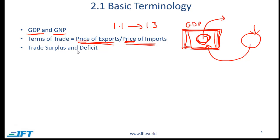Trade surplus and deficit: if a country has high exports relative to imports, we say it has a surplus; otherwise the country has a deficit. We'll see this in more detail over the rest of this reading.